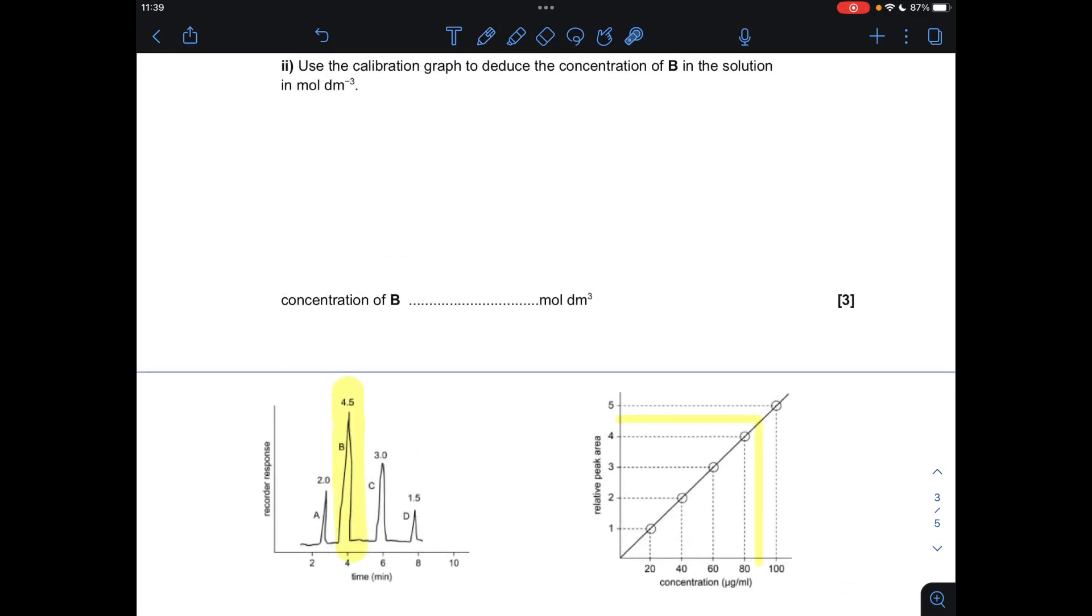Moving on to the final part of the question, we've got to use the calibration graph, this thing here, to deduce the concentration of B in the solution. But importantly, it has to be in moles per decimeter cubed, whereas we've got this awful unit here of micrograms per milliliter.